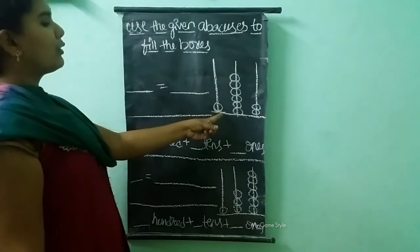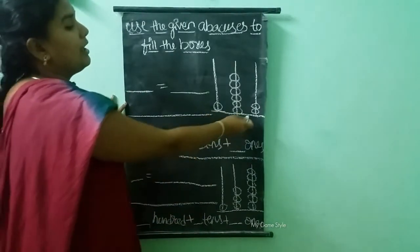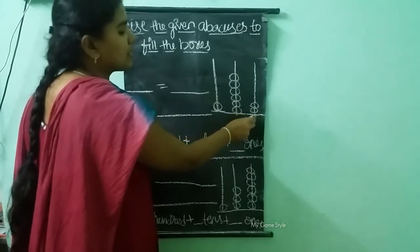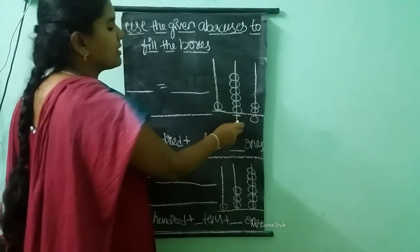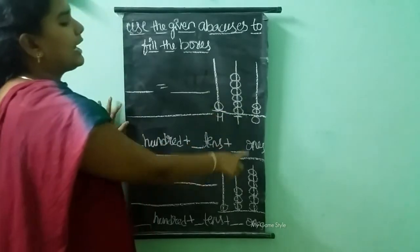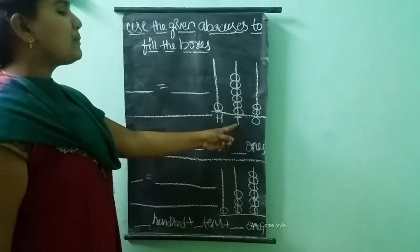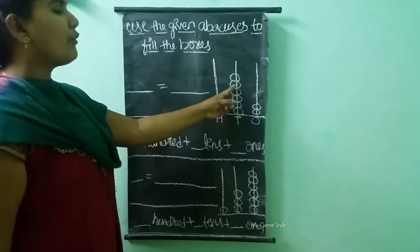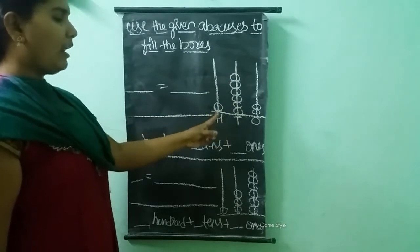First we need to see the abacus. Here in ones place — this is the ones place, this is the tens place, and this is the hundreds place. In ones place, we have two beads. In tens place, we have six beads.